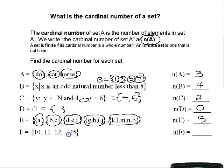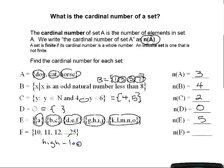Finally, set F is {10, 11, 12, …, 25} — the pattern continues up to and including 25. You could count each element, but since these are consecutive natural numbers, we can use the shortcut: high minus low plus 1. So 25 minus 10 is 15, plus 1 is 16. The cardinal number of set F is 16.